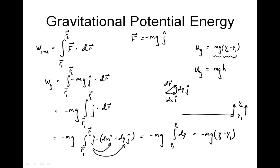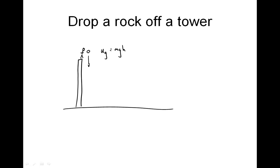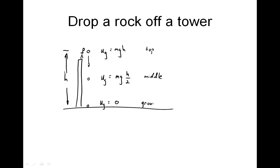We'll see examples where the ground isn't the best datum, but in general it works fine. If I have a rock on top of a tower, with the ground level below and the tower rising up, and I drop the rock from the top, then at the top the gravitational PE equals mgh, where h is the height above the ground. At half the tower height, the gravitational PE equals mg times h over 2. And just before the rock hits the ground, its height is zero, so the gravitational PE is zero. The PE at the top is twice that at the midpoint.